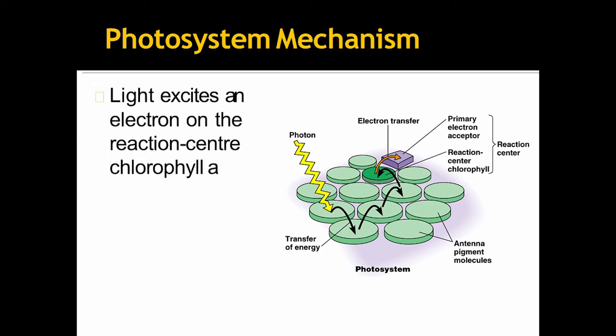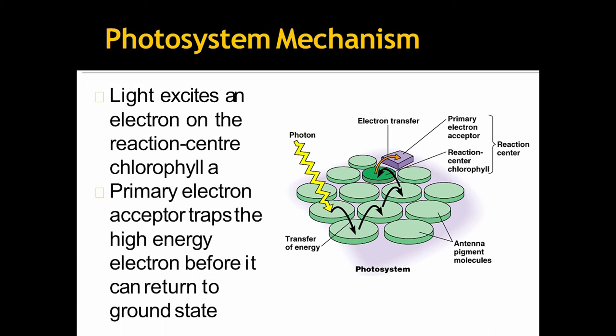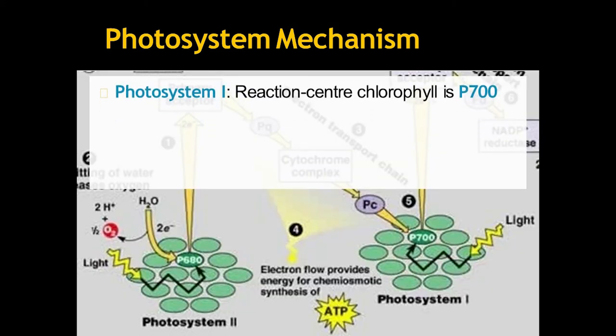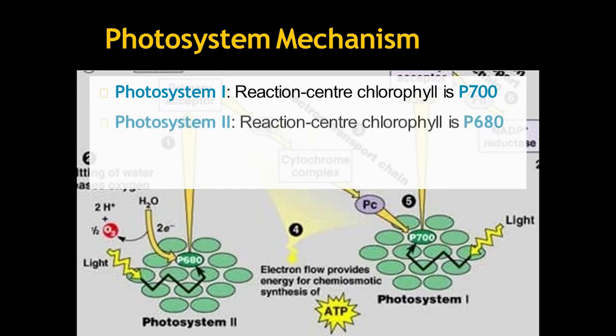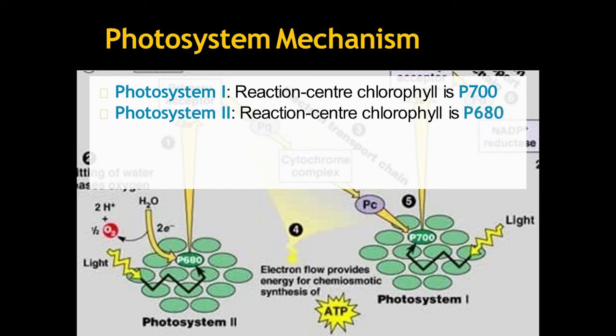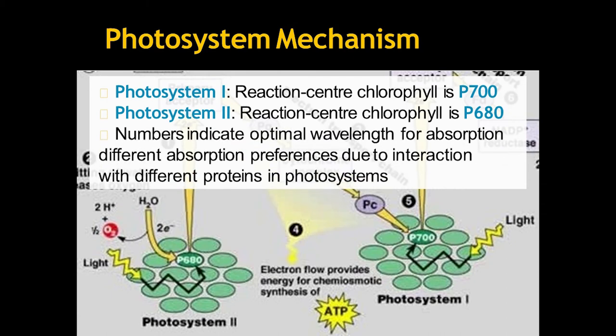Now, light excites an electron on the reaction center of chlorophyll A. The primary electron acceptor traps the high energy electron before it can return to ground state. So, there are two photosystems. One is photosystem 1 which has reaction center of chlorophyll of P700 and photosystem 2 reaction center chlorophyll A is P680. The number that mean 700, 680, these numbers indicate optimal wavelength for absorption, different absorption preferences due to interaction with different proteins in photosystems.